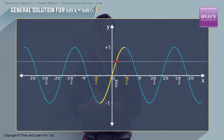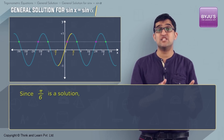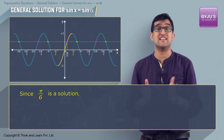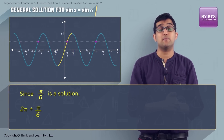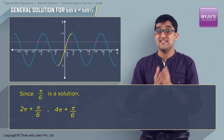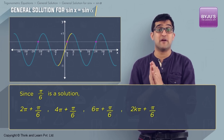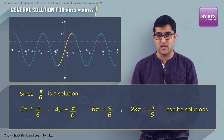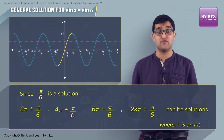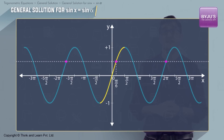In the complete range of sin x, the graph intersects at various points. If you observe carefully, since π/6 is a solution, then 2π + π/6, 4π + π/6, 6π + π/6, and every 2kπ + π/6 is a solution, where k is an integer. We are still left with some more points — how do we identify them?